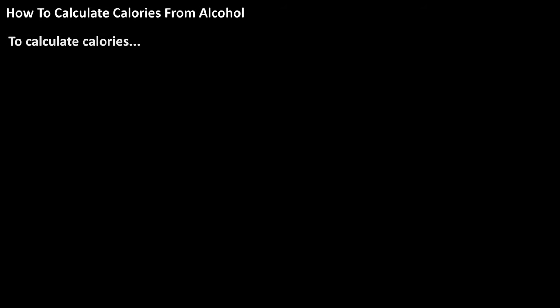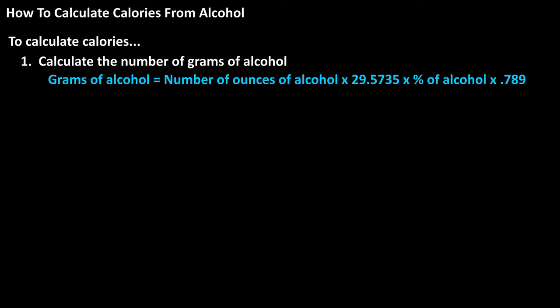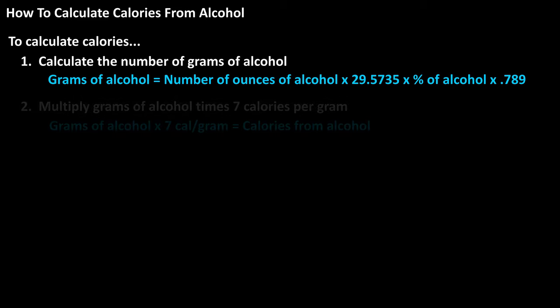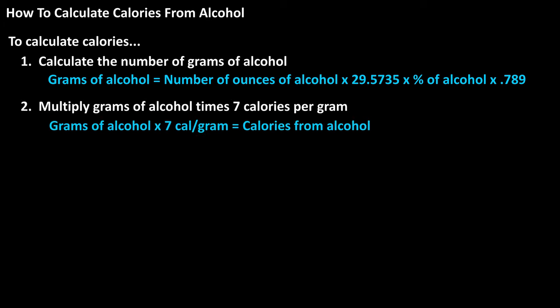To calculate the number of calories from alcohol in an alcoholic beverage, we first have to calculate the number of grams of alcohol. The formula is: grams of alcohol equals the number of ounces of the beverage times 29.5735 times the percentage of alcohol times 0.789. Then we take that result and multiply it by 7 calories per gram, as alcohol provides 7 calories per gram.